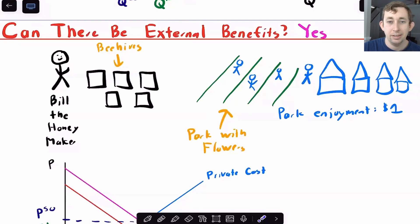So now the town actually gets a benefit out of Bill making honey. And so if they're getting a benefit out of Bill making honey, Bill is probably not taking that benefit into account. So you might think, well, it's probably the case that Bill is making too little.